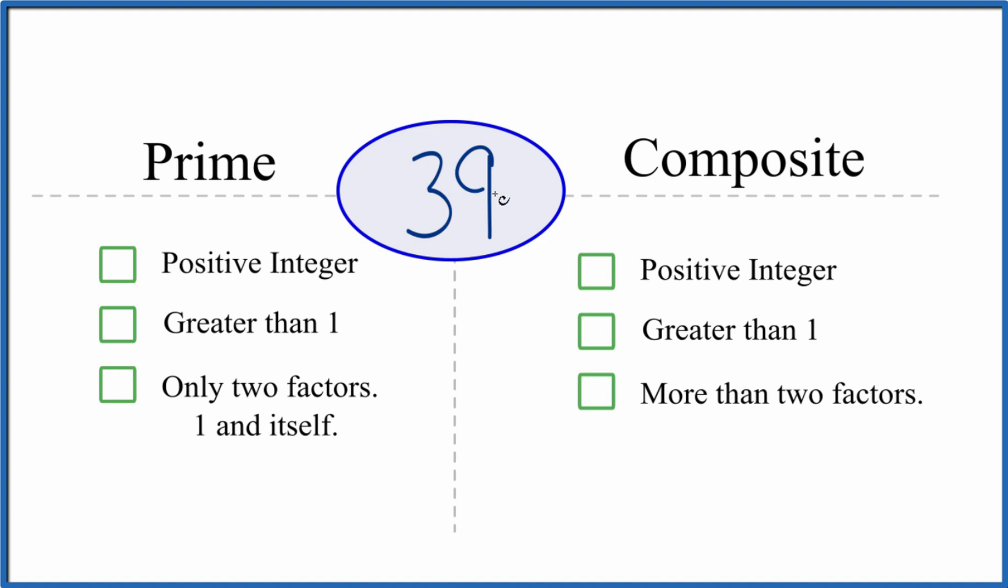Is it a positive integer? It's positive. It's a whole number. So we have that. It's greater than 1. 39 is greater than 1.